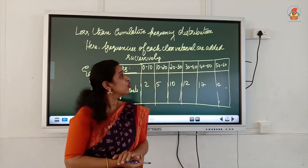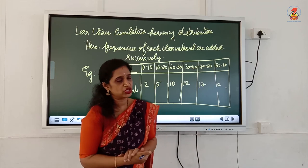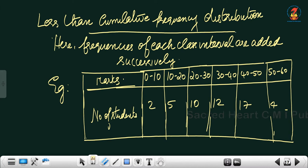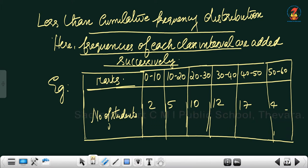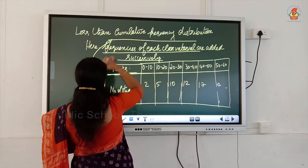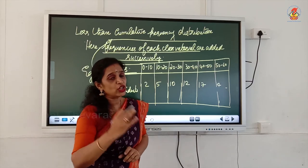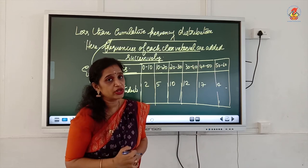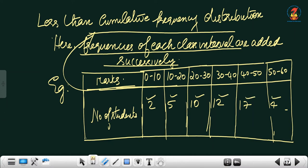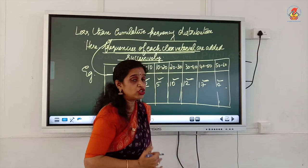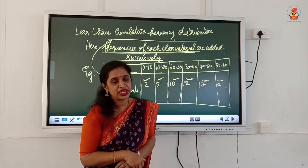In a less than cumulative frequency distribution, the frequencies of each class interval are added successively. Here is an example of a normal continuous series with frequencies 2, 5, 10, 12, 17, and 4. To convert this into a less than cumulative frequency series, these frequencies have to be added successively at each step.